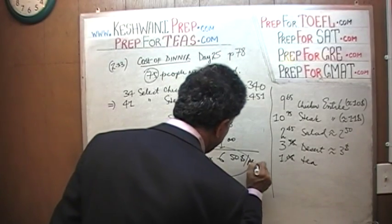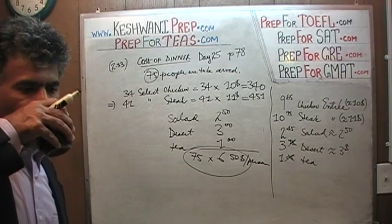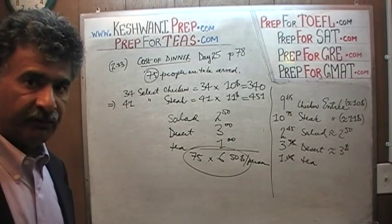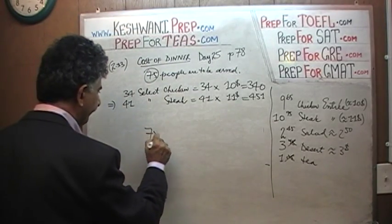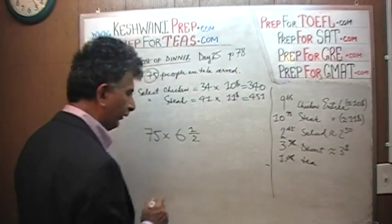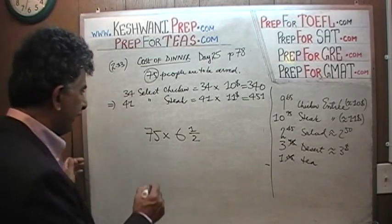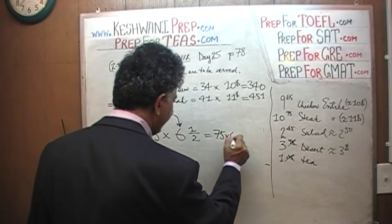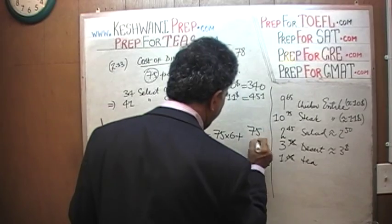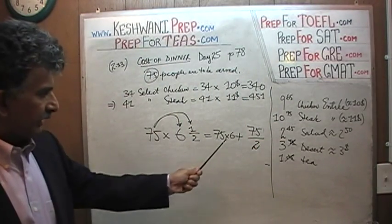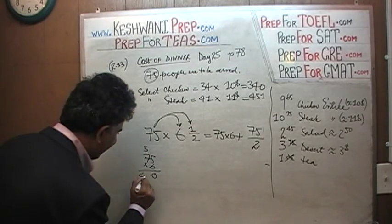So that's $6.50 per person times 75 people. Let's see how we do it. 75 times $6.50 is the same as 75 times 6, plus 75 times 1.5. This part is easy: 75 times 6 — 6 times 5 is 30, carry 3; 6 times 7 is 42, plus 3 is 45. So it's $450.